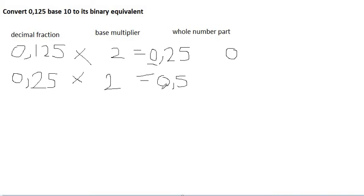The whole number part again is 0, so we note down 0. Then we take the fraction again, that's 0.5 times 2, our answer in this case is 1.0. We note down the whole number part which is 1.